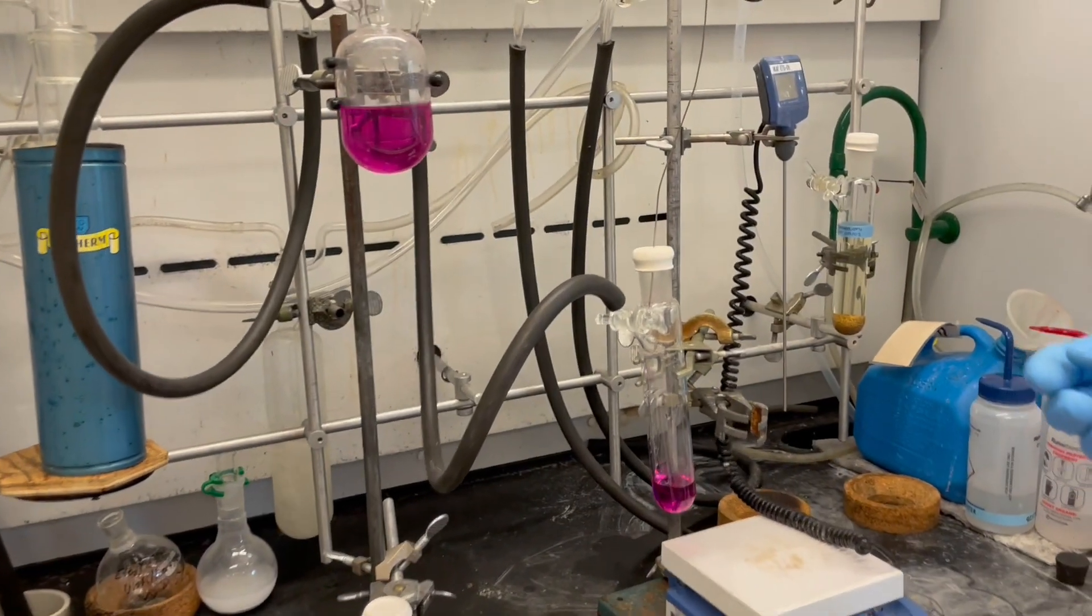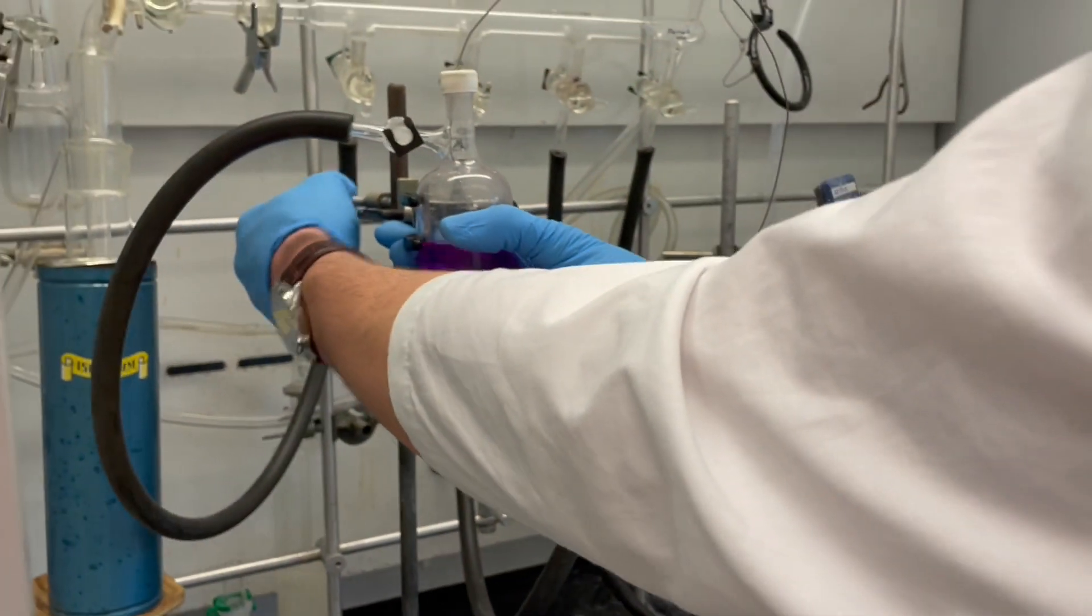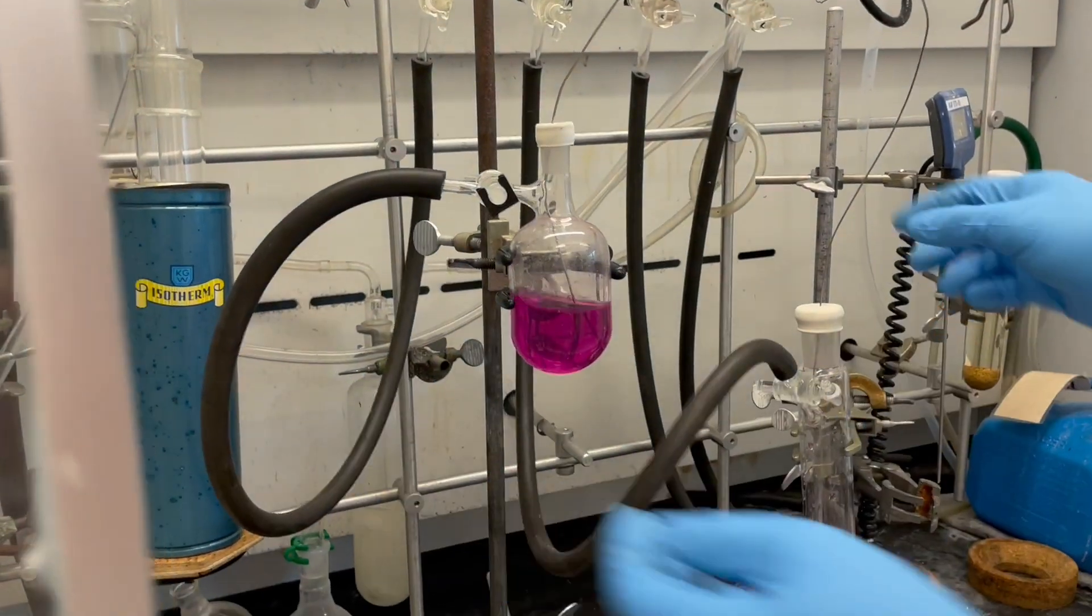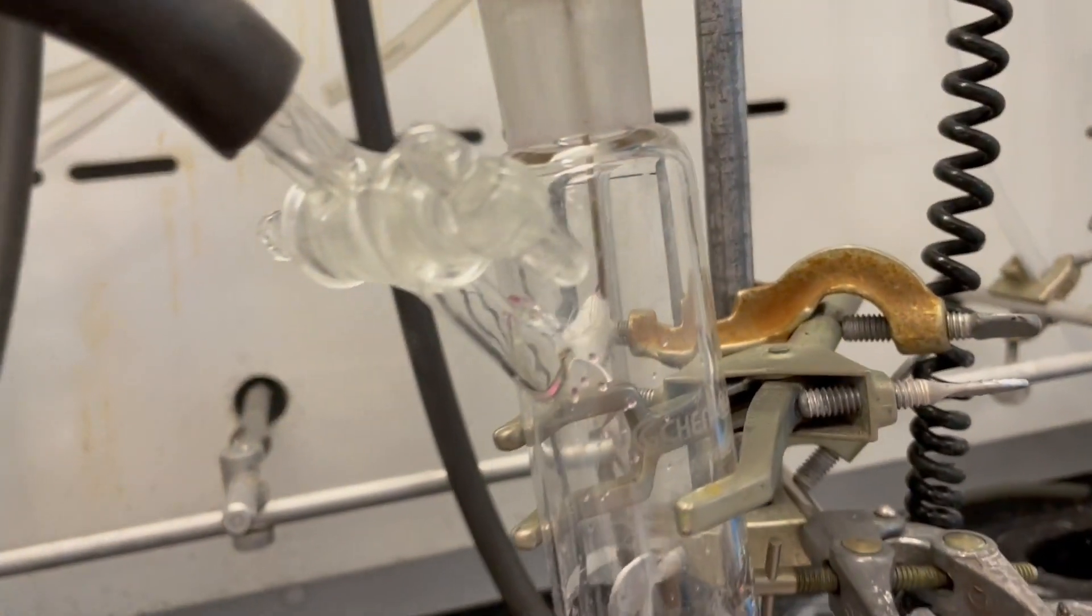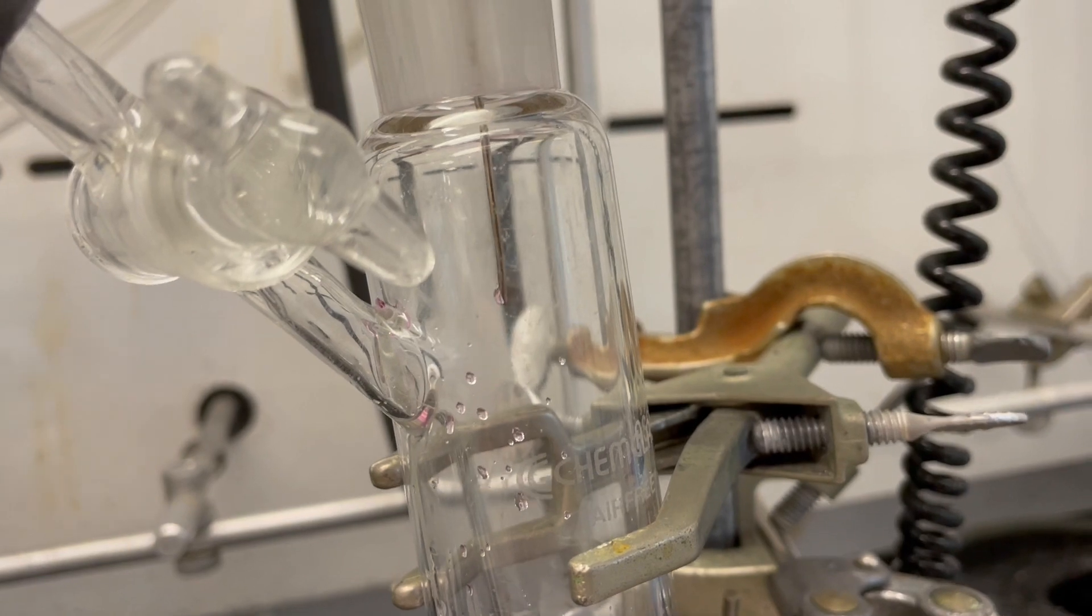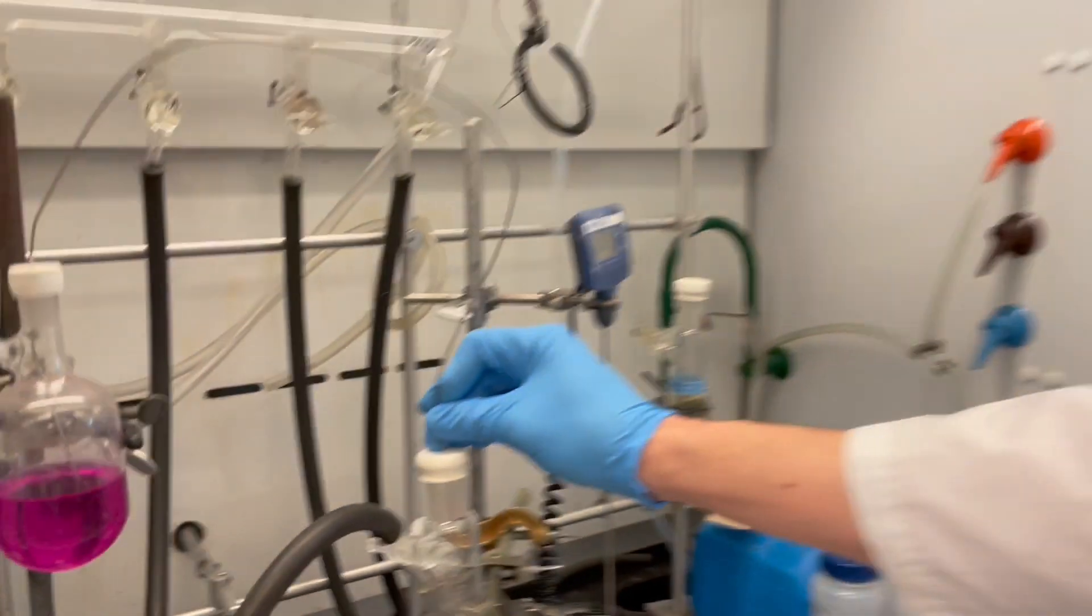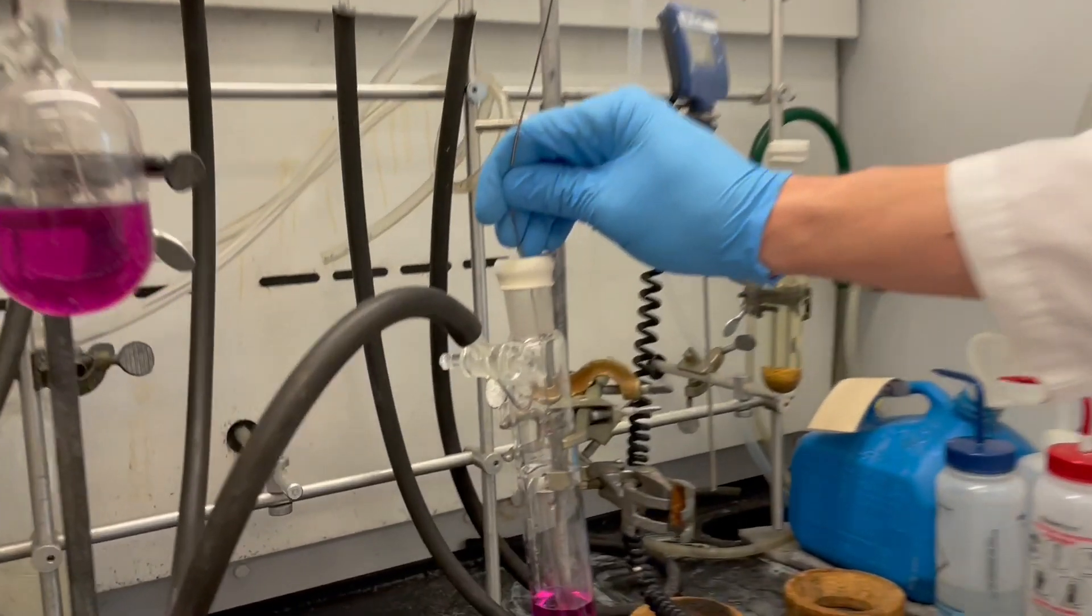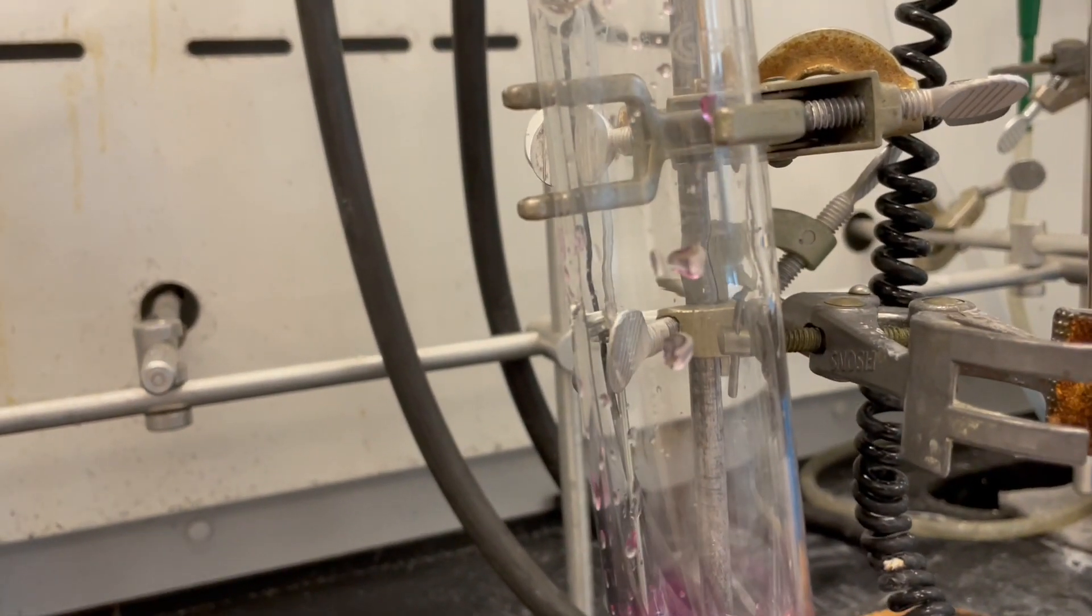The first method of control is by lowering our transfer flask. The second method we can use to increase the rate of flow is to lower the cannula into the receiving flask.